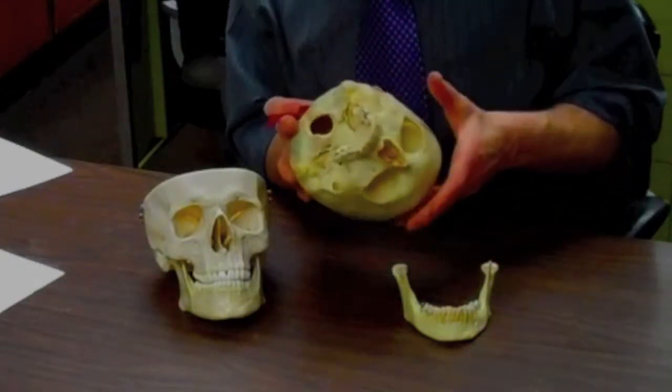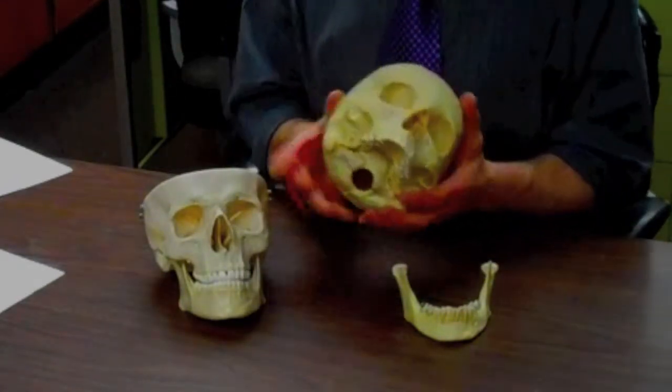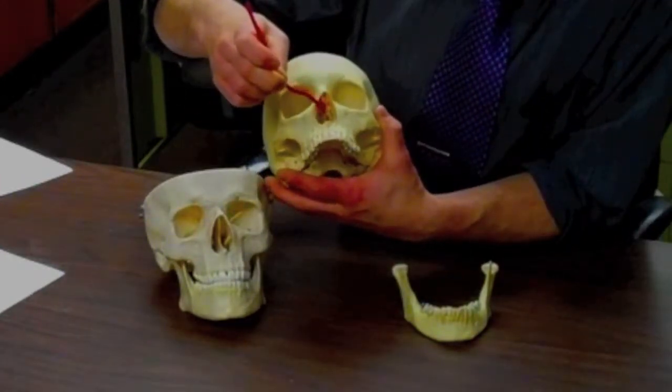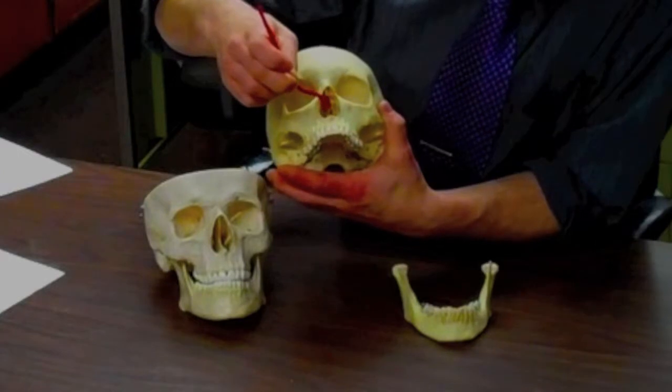Lastly but not least, we have the ethmoid bone. And the ethmoid bone is a bone that sits inside the nasal area, inside the nose.